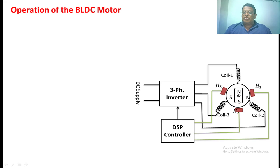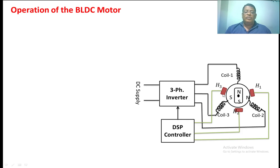Now we are going to see how the BLDC motor operates. The rotor contains permanent magnets. On the stator, there are 3 coils which are displaced by 120 degrees. The excitation is given to the stator winding through a 3-phase inverter. H1, H2, and H3 are the Hall effect sensors which are placed in the stator. The signals from the Hall effect sensors are given to the DSP controller.